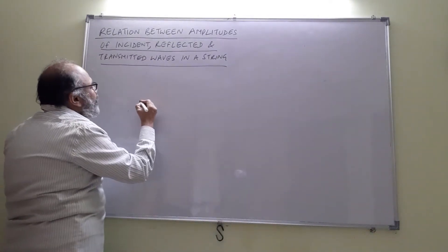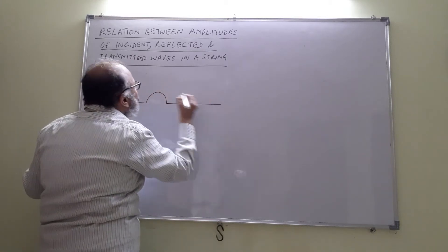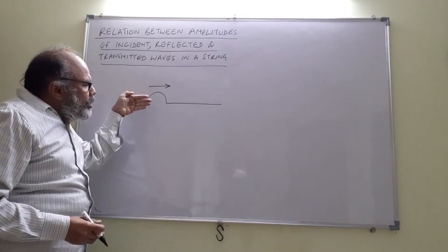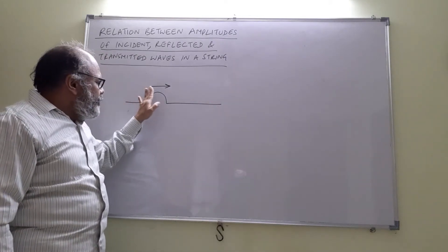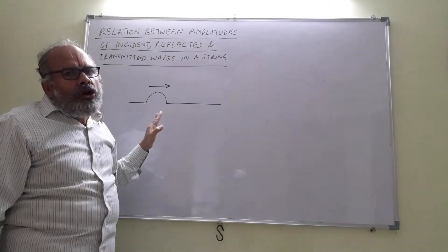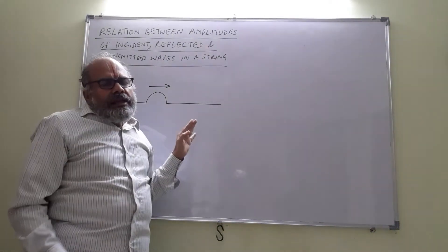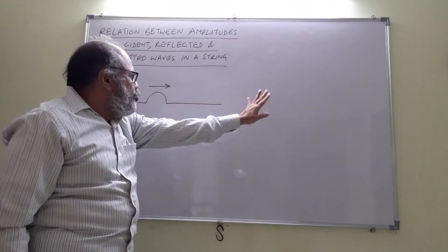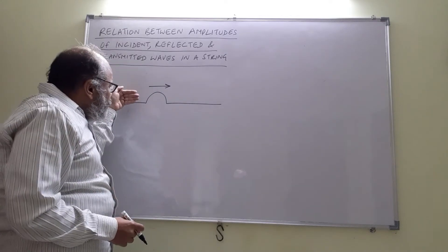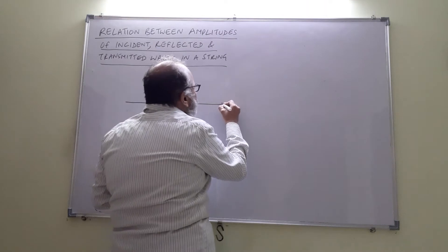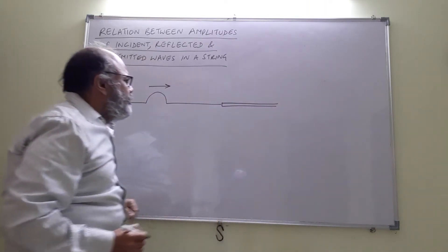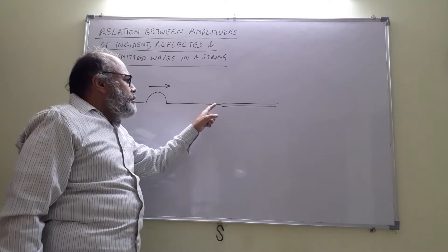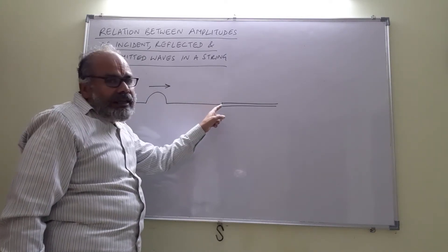Supposing there is a pulse moving in a string — this pulse will continuously move ahead if the medium, that is the string, is homogeneous. By homogeneous, we mean the elastic properties and the inertia properties must be the same throughout. But when this pulse is moving, if it encounters another medium — say a thicker string — when it reaches this junction, it will be partly reflected and partly transmitted.